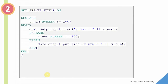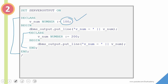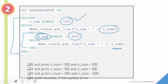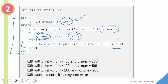Now let us move ahead to the next question. Here is a simple anonymous block — you can think of it as an outer block and an inner block. In the outer block, I have declared a variable 'v_name' of number data type and assigned a value of 100, then we print the value. In the inner block, we also declare the same variable 'v_name' of number data type and assign a value of 200, and from the inner block we also print. The question is: what would be the output of this anonymous block?